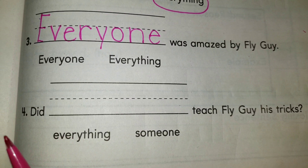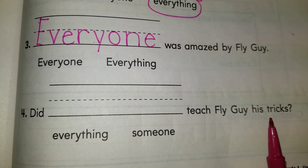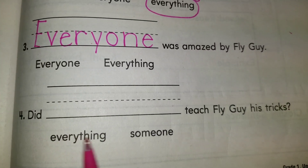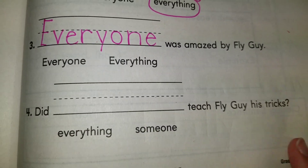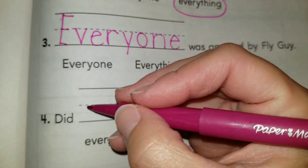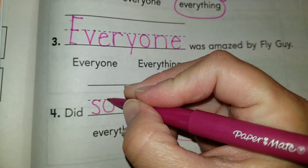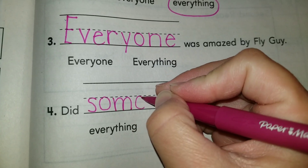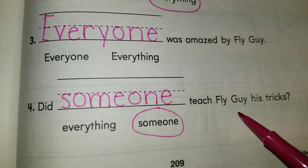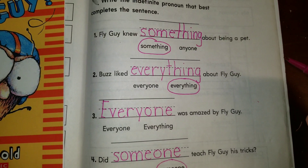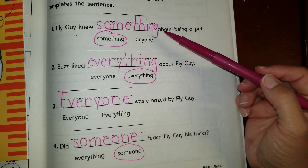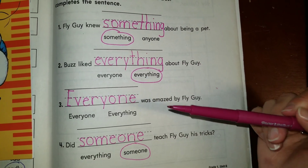Alright, and then our last one, boys and girls: 'Did blank teach Fly Guy his tricks?' 'Did everything teach Fly Guy his tricks?' or 'Did someone teach Fly Guy his tricks?' It's going to be 'someone,' right? It refers to a person. 'Did someone teach Fly Guy his tricks?' And this is what we have: something, everything, everyone, and someone.